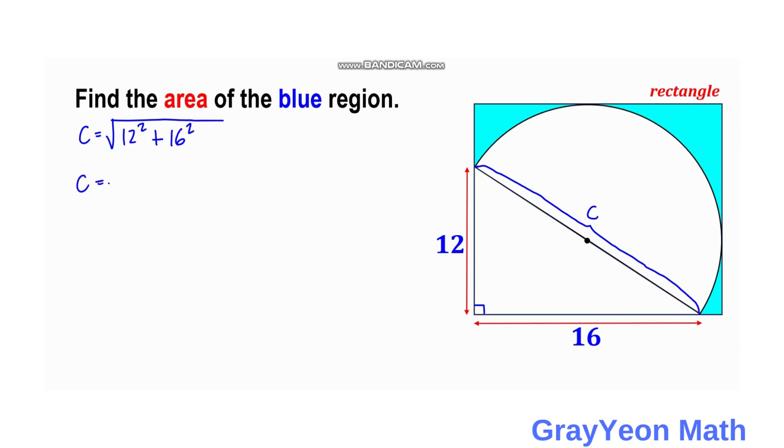That would be c equals the square root of 144 plus 256, and c equals the square root of 400, and c equals 20 units.